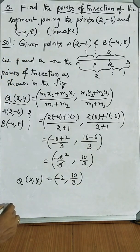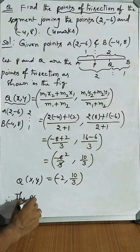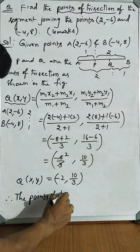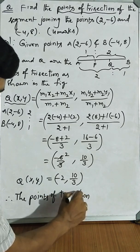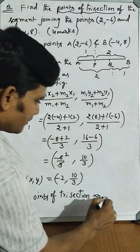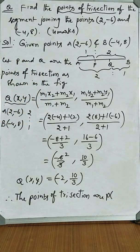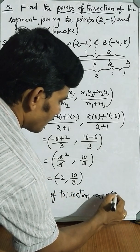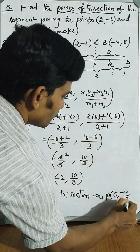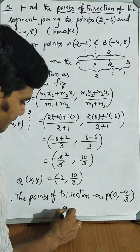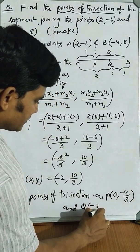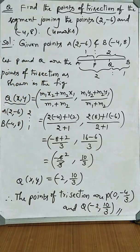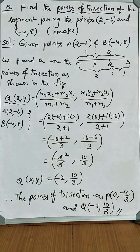This is how we find - therefore, the points of trisection are P(0, -4/3) and Q(-2, 10/3). These are the required points. Thank you, I hope you understand.